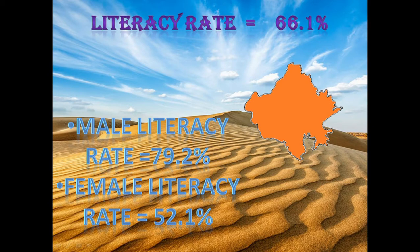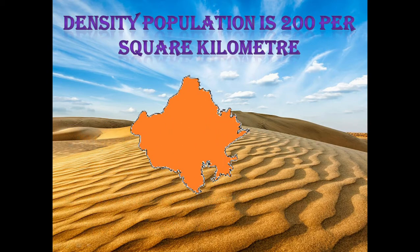The literacy rate in Rajasthan is 66.1 percent. The male literacy rate is 79.2 percent and the female literacy rate is 52.1 percent. The density of population is 200 persons per square kilometer, meaning how many people live in one square kilometer.